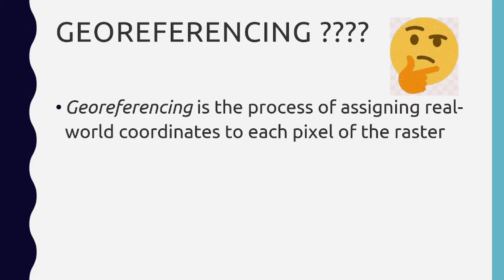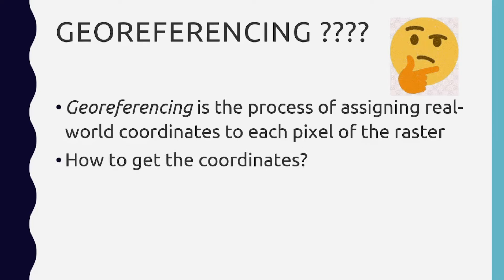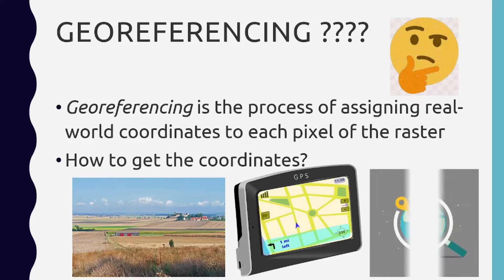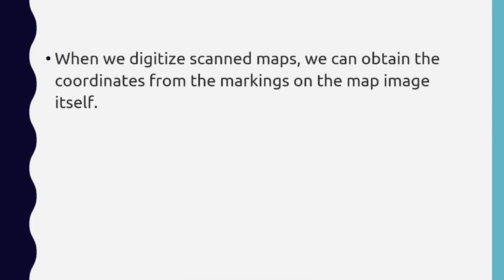Now, how do we get the real world coordinates? It can be done by field visits, or you can get the coordinates with the help of GPS devices, or you may identify some features from the image or map and collect the coordinates. Whenever we are trying to digitize scanned images, we will be obtaining the coordinates by marking on the map image itself. We'll see how this is done further in the video.